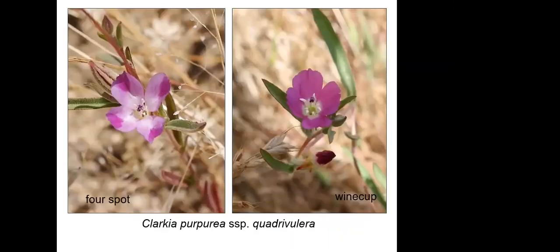There are a lot of Clarkias named after Lewis and Clark, who collected these on their Expedition West. This is Clarkia purpurea subspecies quadrivalera — but look at how different two individuals can be. One has four very distinctive lavender or magenta spots, while the other has petals that are all magenta. We call these the four-spot and the wine cup Clarkia, but they're the same species and even the same subspecies.